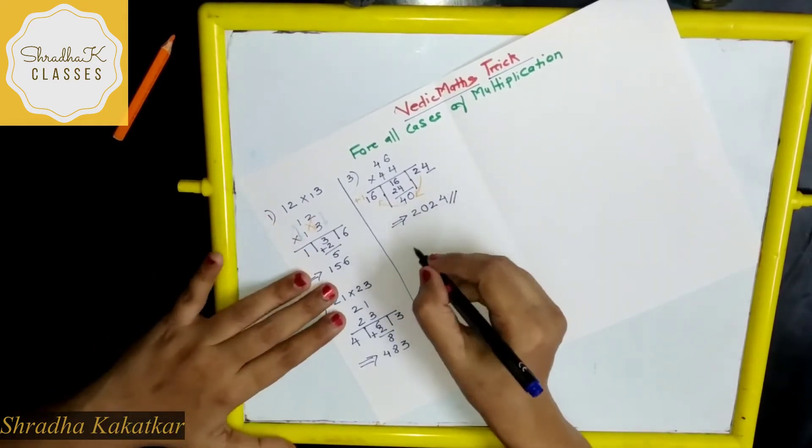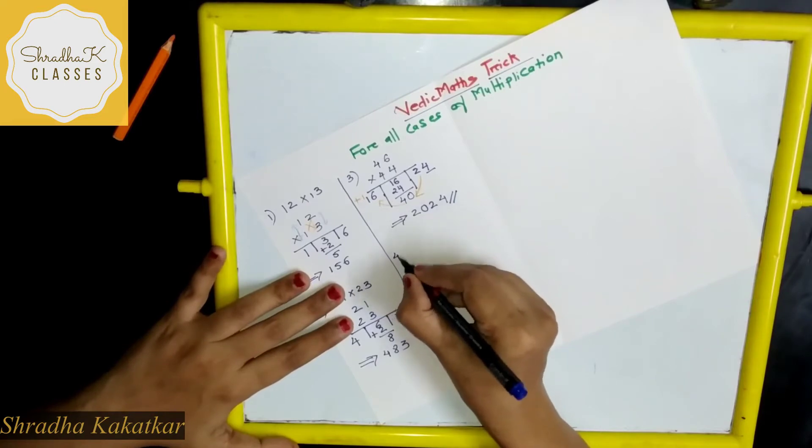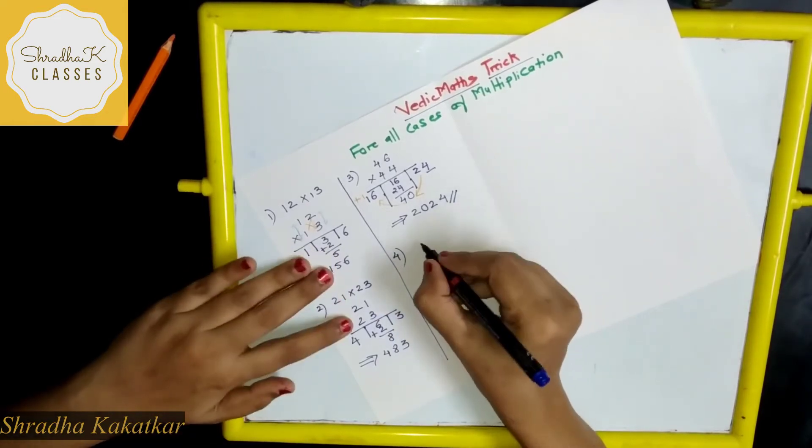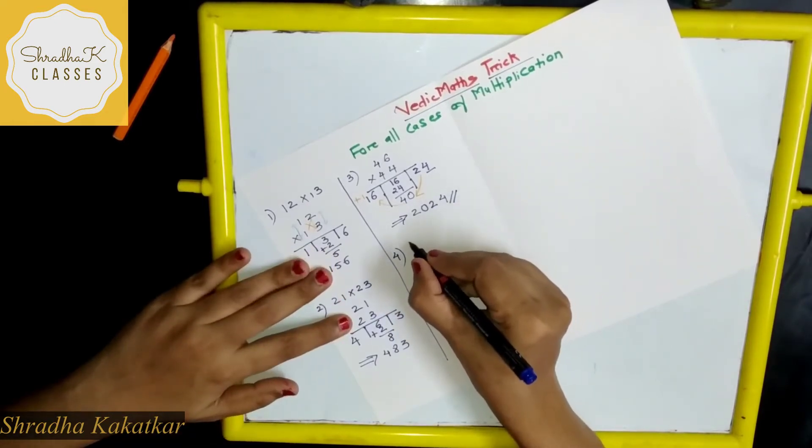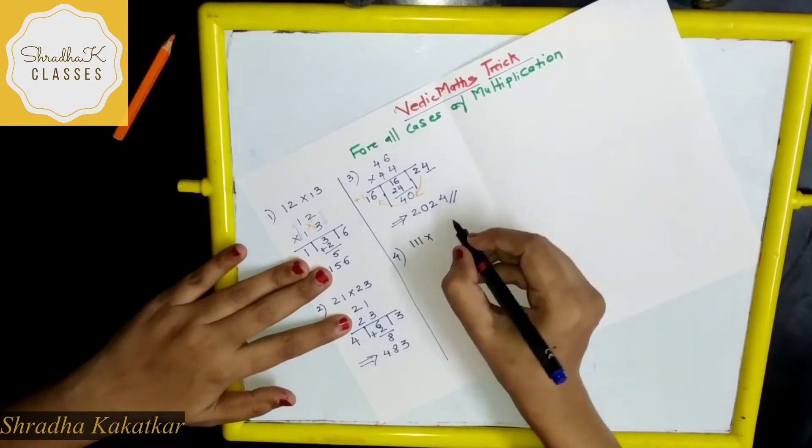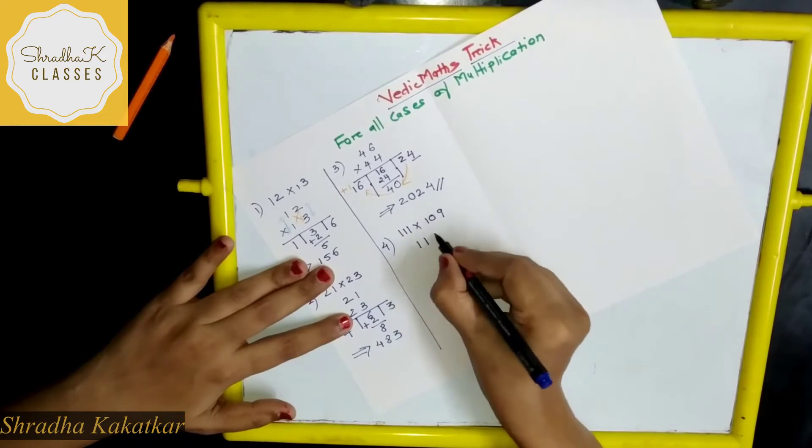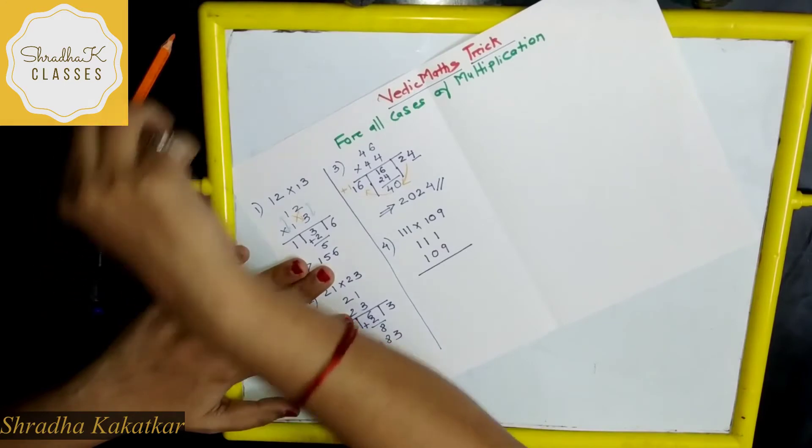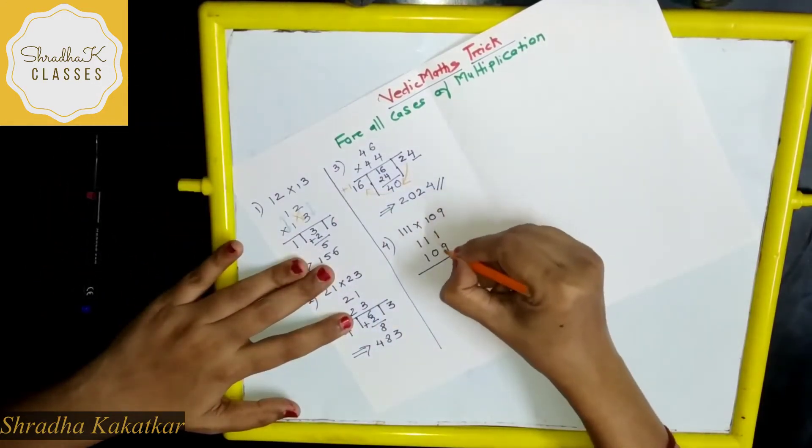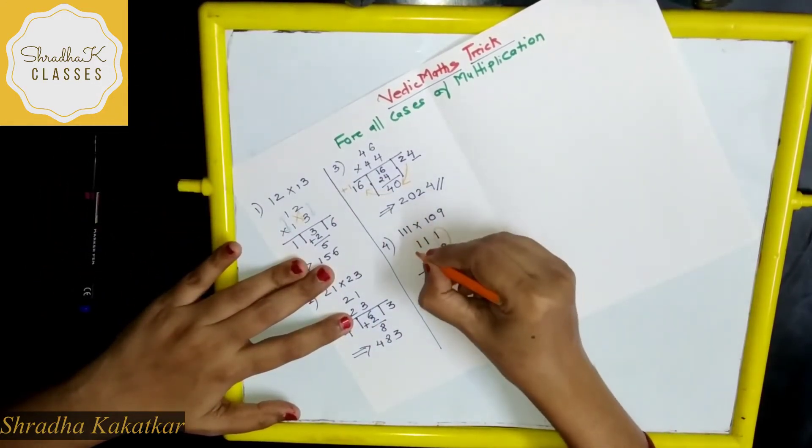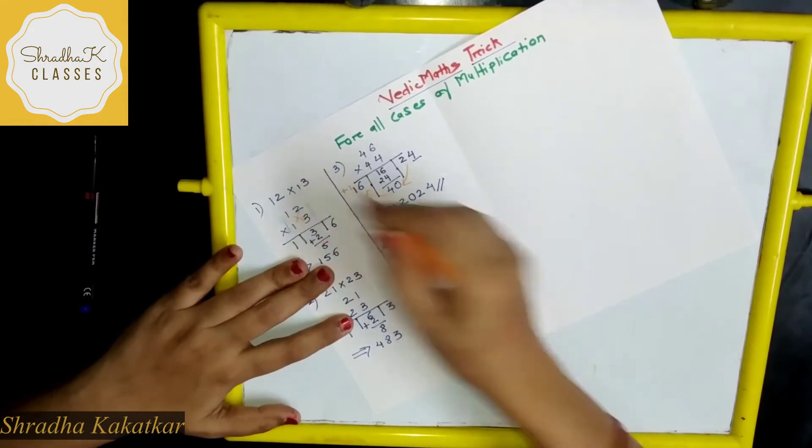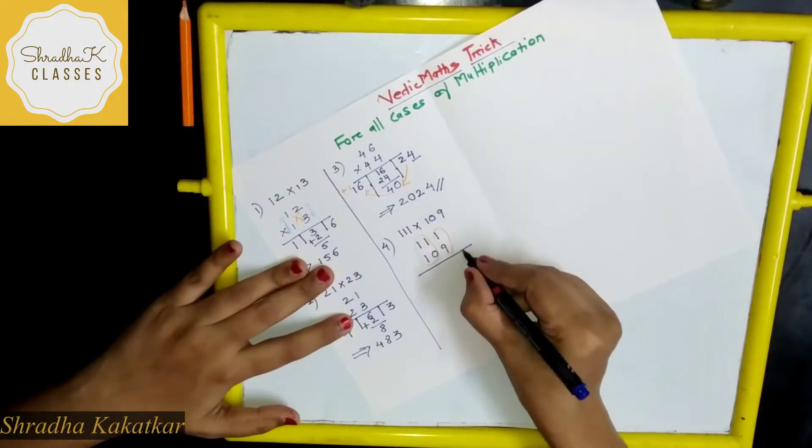Now let's take 3 digit number. Let's take 111 into 109. That is 111, 109. So what you will do here? Again you have to vertically multiply these numbers, 9 into 1. First divide.